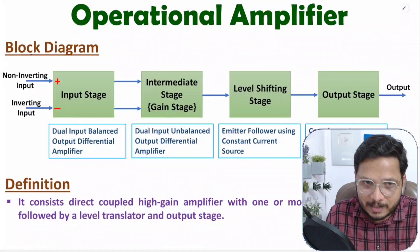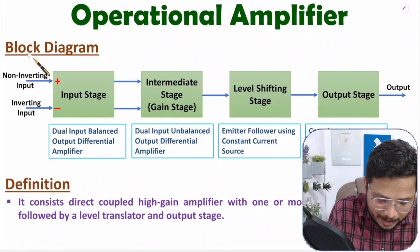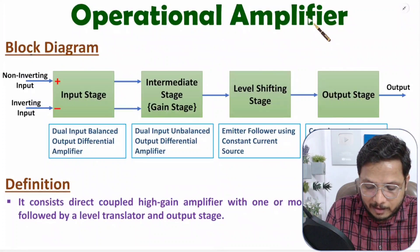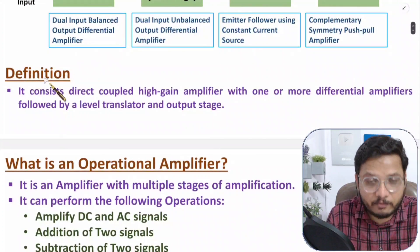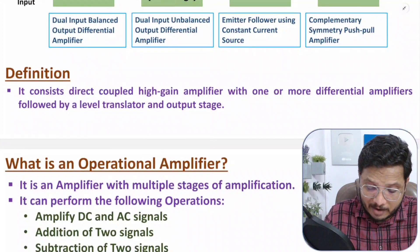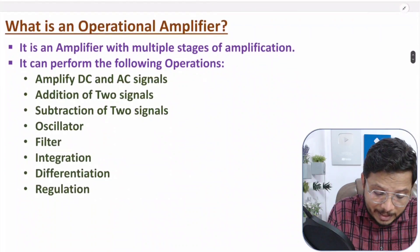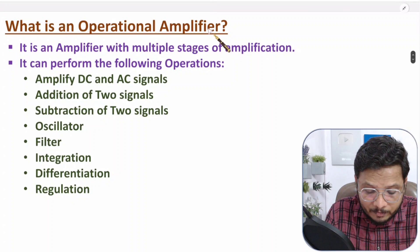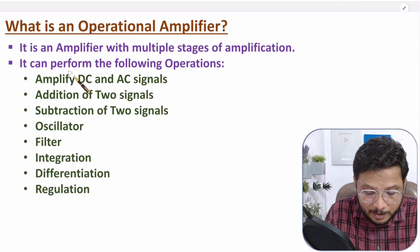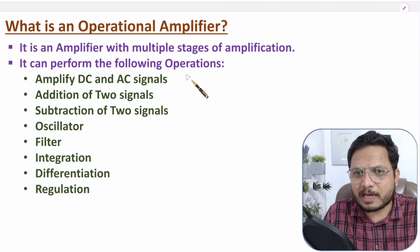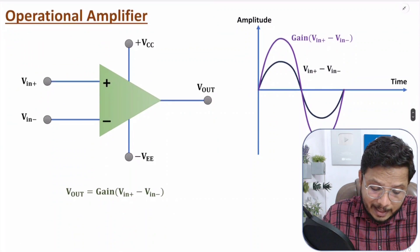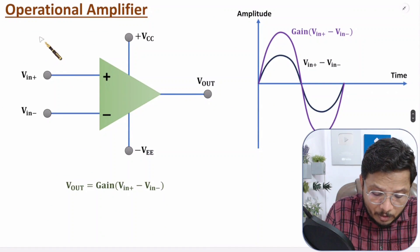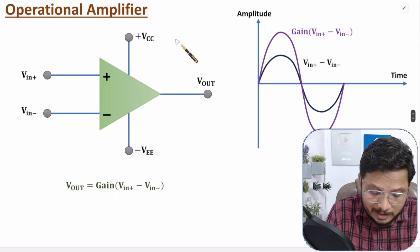First, I will be discussing the block diagram of the operational amplifier. After that, I will explain the basic definition of the operational amplifier. After that, I will explain what an operational amplifier is. Using an operational amplifier, we can perform so many operations — that is what I will be discussing here. After that, I will explain the basic symbol of the operational amplifier.